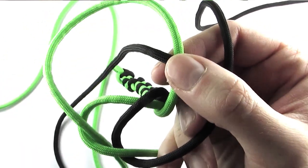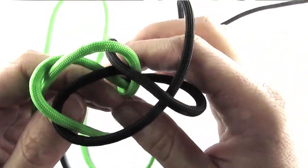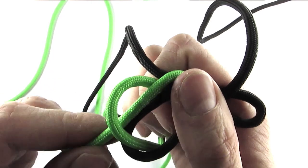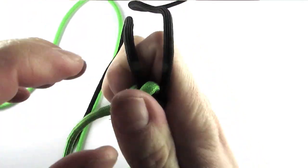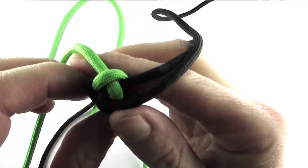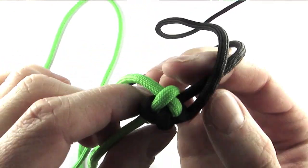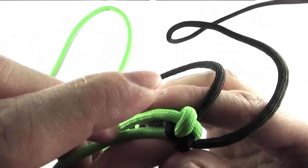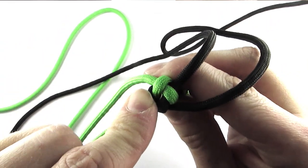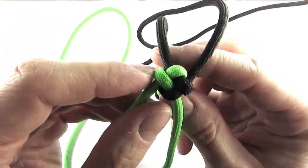Now once I'm going to tighten this, I will get a crown knot, which is defined as a square shape if you're using four strands like I am here. So it will look like a square, which it does.